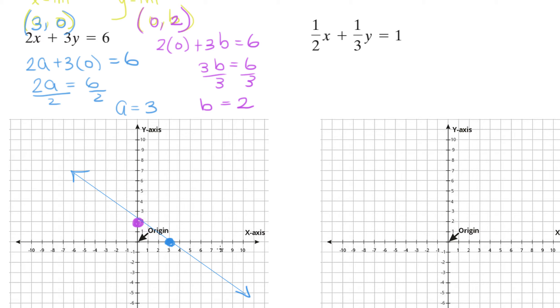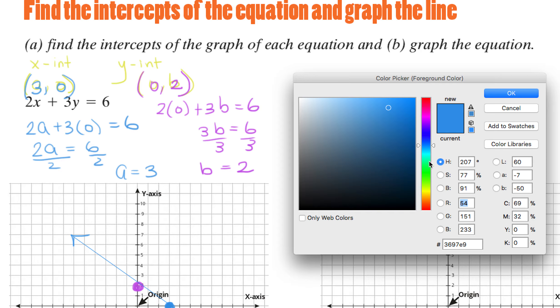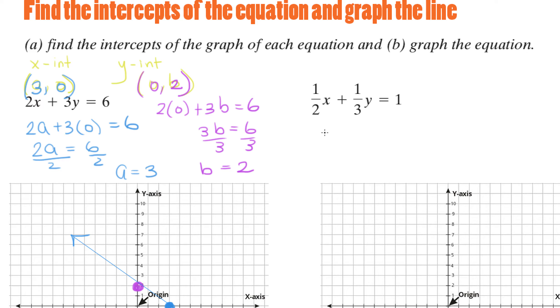Now the same thing can be done here. The reason I chose this problem was because it had fractions, but the concept is exactly the same way. So again, to find the x-intercept, we plug in a for x and 0 for y. So you have one half a plus one third times 0 equals 1. That means that one half a equals 1.